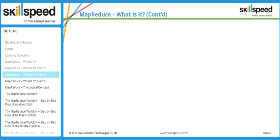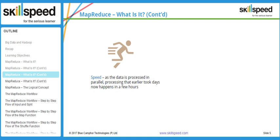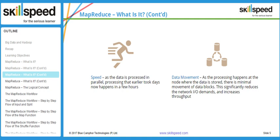The fourth advantage is speed. Traditional programming techniques analyze data sequentially, but MapReduce does it in parallel so processing is really fast. The fifth advantage is data movement — since processing happens at the nodes where the data is stored, there is minimal movement of data blocks. Taking all the blocks from different DataNodes and combining them through the network is not cost-effective. MapReduce sends the program to the data, saving network bandwidth and improving performance.